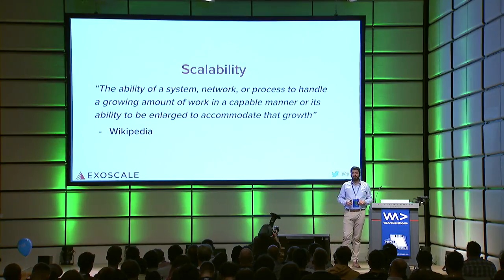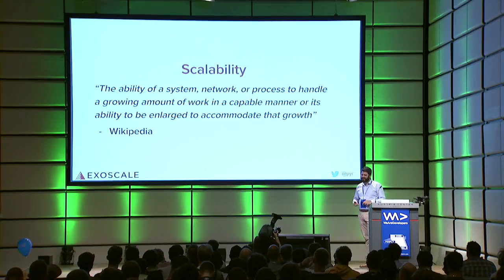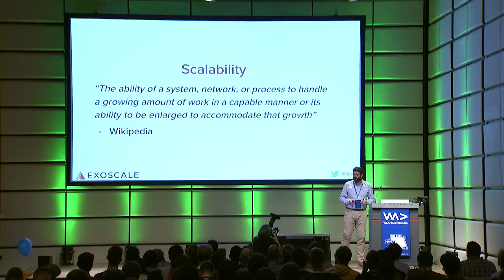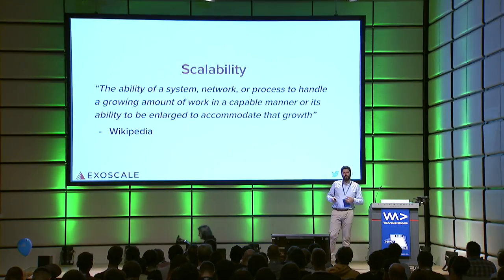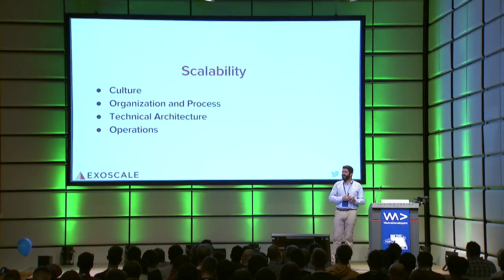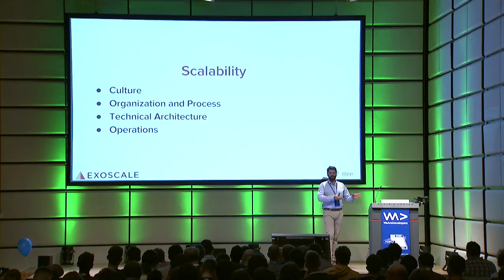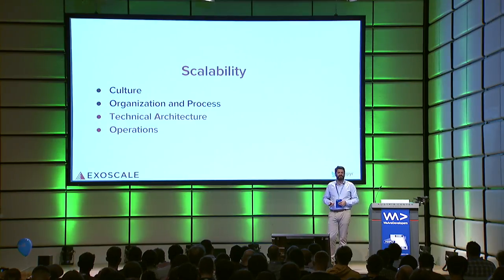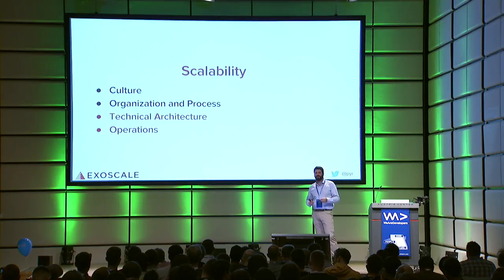I took a page from Wikipedia and how they define scalability: the ability of a system, network, or process to handle a growing amount of work in a capable manner, or its ability to be enlarged to accommodate growth. There are many stories to be told about scalability as systems and organizations expand and need to get bigger and faster. Some factors are purely human, some are cultural and organizational. Today's talk is focused on the code and architectural aspect of scalability.